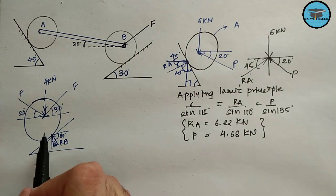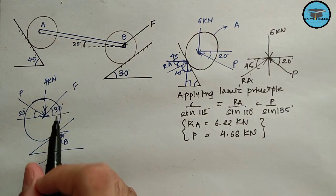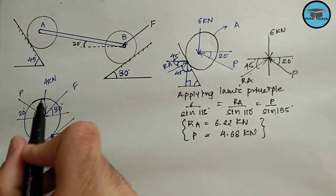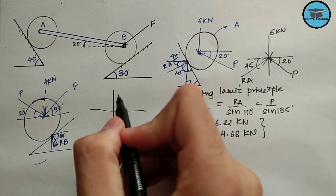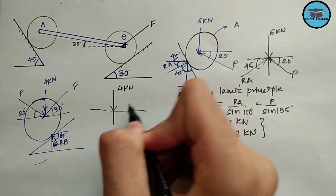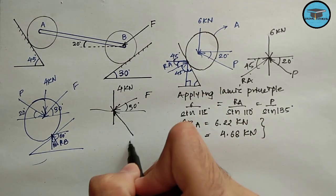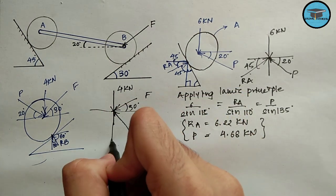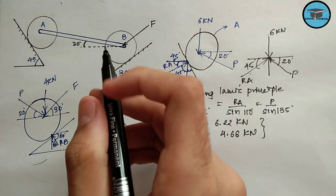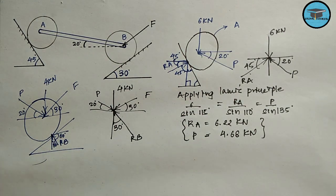Now we will apply the conditions of equilibrium for cylinder B. We won't apply Lami's principle here as there are more than three forces. Before applying equilibrium, let us draw it in quadrant form: 4 kN downward, F inclined at 30 degrees with the horizontal, R_B inclined at 30 degrees with the vertical, and P inclined at 20 degrees with the horizontal.